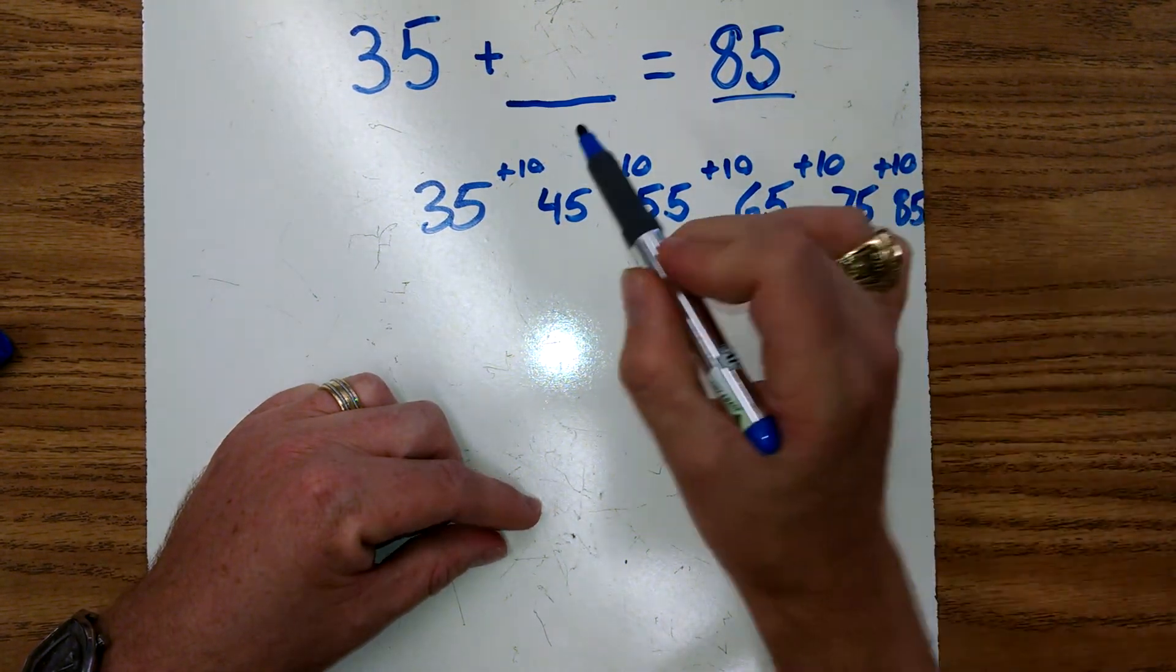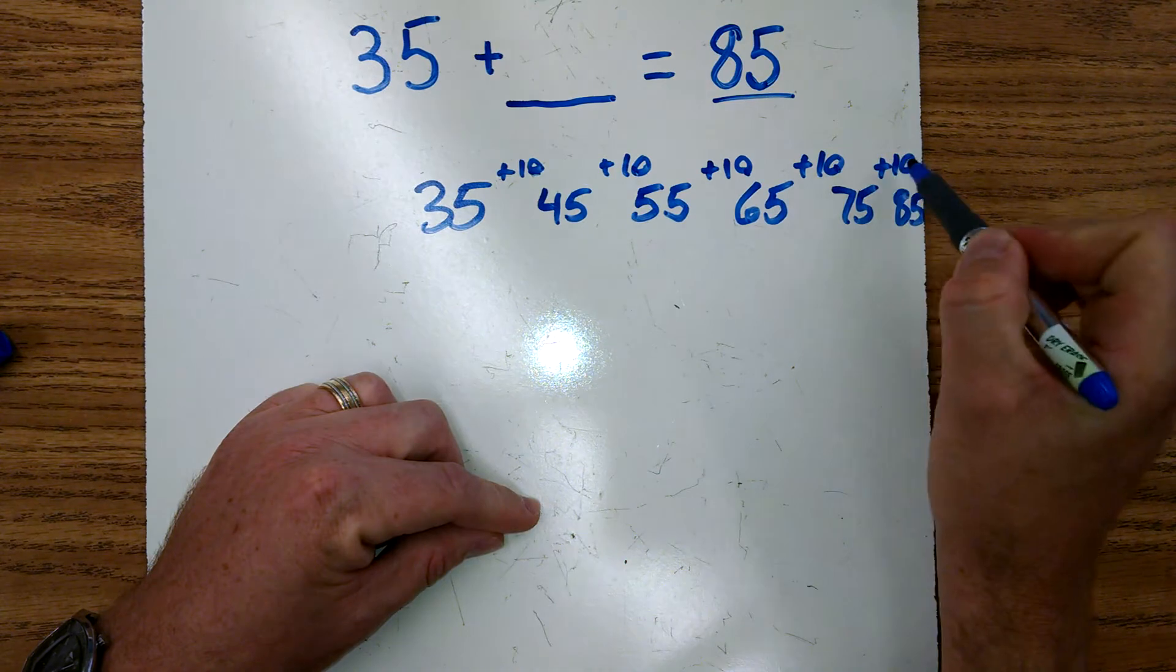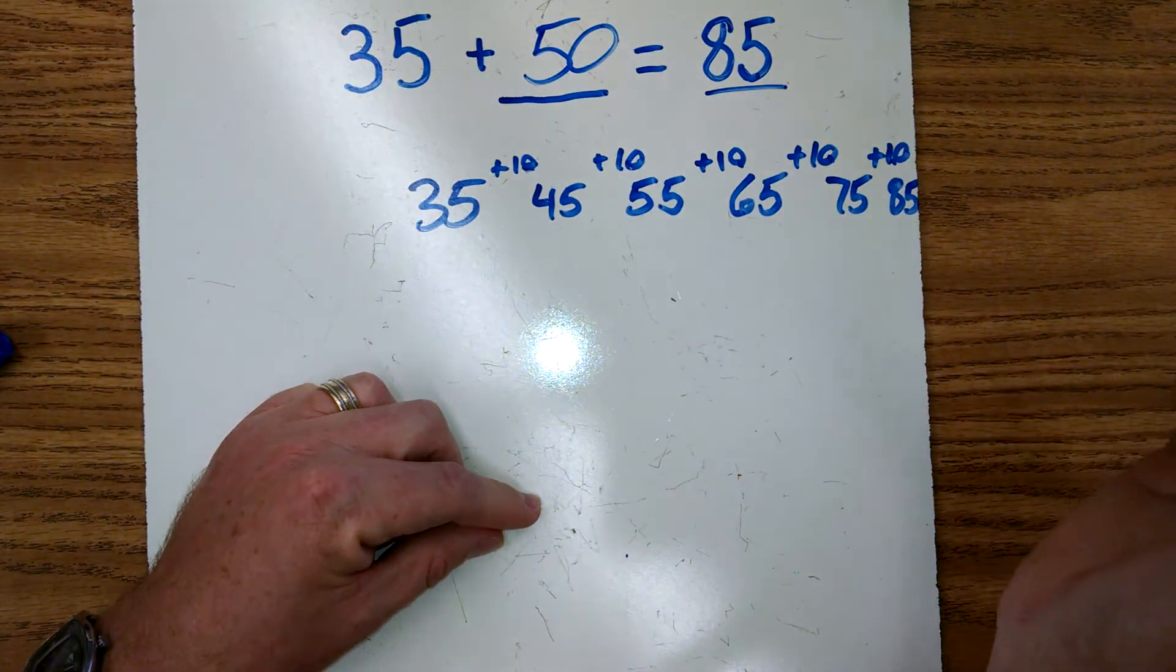So now we have to just go back and pick up the pieces: 10, 20, 30, 40, 50, and there's your answer.